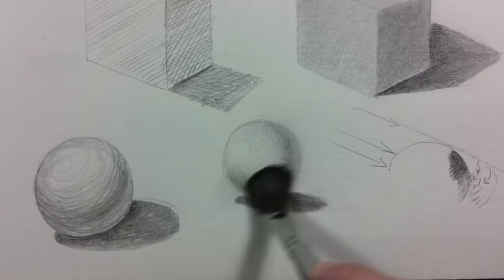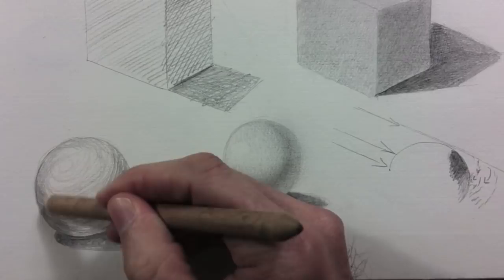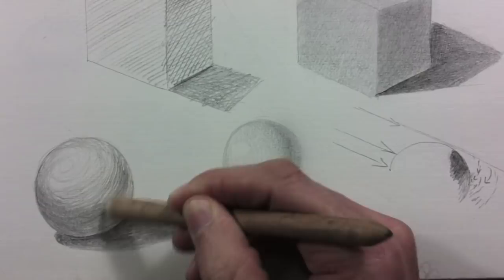There are tools that help us shading, such as a brush, a stump, etc. Of course, what they do is that they smudge the graphite or the charcoal.